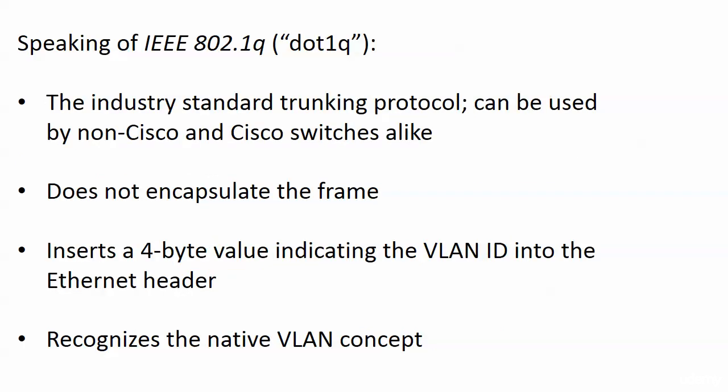802.1Q is industry standard — a phrase you should look for on your exams and in white papers — meaning that everybody can use it. So 802.1Q, the industry standard trunking protocol, can be used by non-Cisco and Cisco switches alike. It does not encapsulate the frame like ISL does. Instead, it inserts a four-byte value indicating the VLAN ID into the Ethernet header — much less overhead. The encapsulation and de-encapsulation is the only extra work for the switches. And 802.1Q recognizes the native VLAN concept.